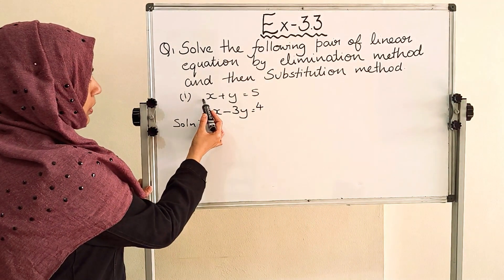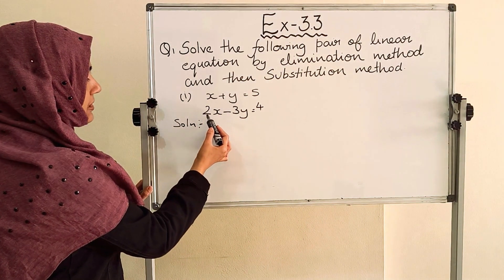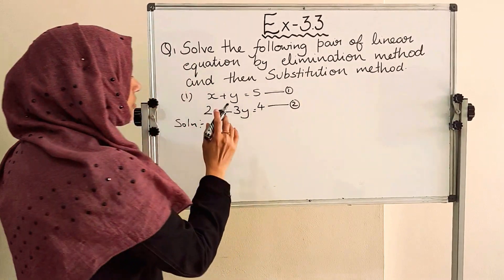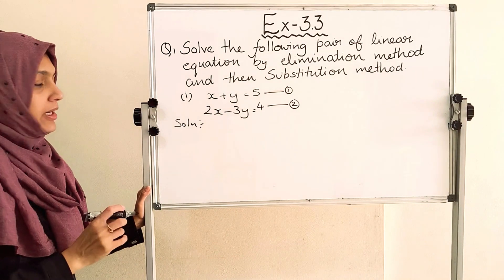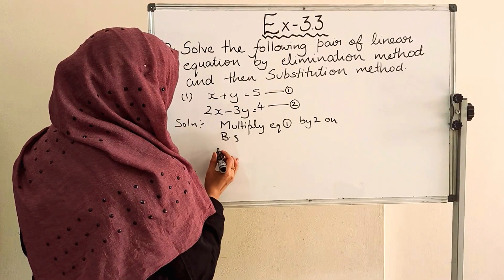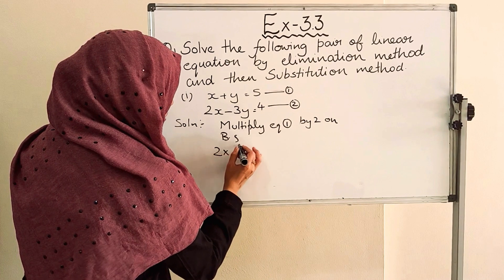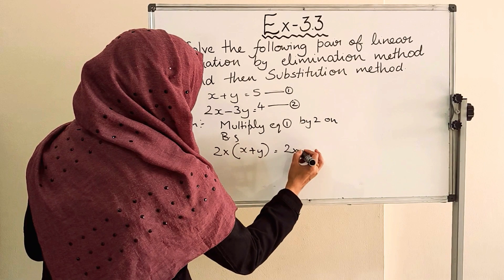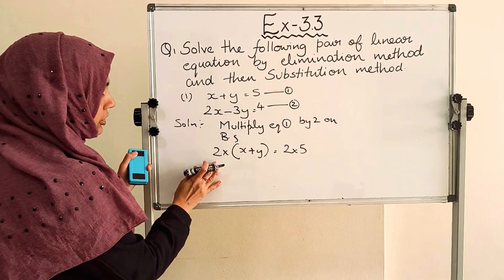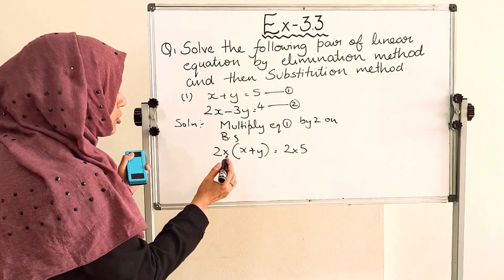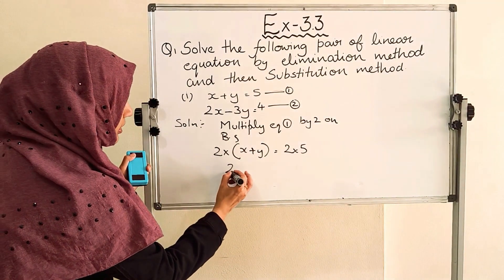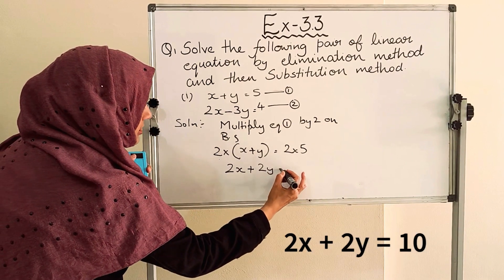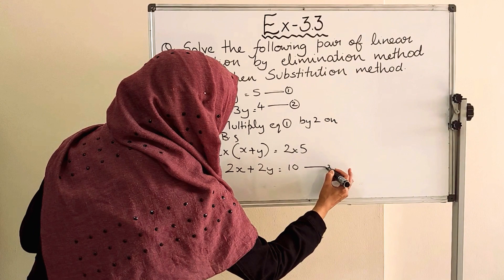Here, the x variable coefficient is 1 in the first equation and 2 in the second equation. Let this be equation number 1 and this is equation number 2. So let us multiply equation number 1 by 2 on both sides. It will become 2 into (x plus y) is equal to 2 into 5. Distributing: 2x plus 2y is equal to 10. This is our equation number 3.